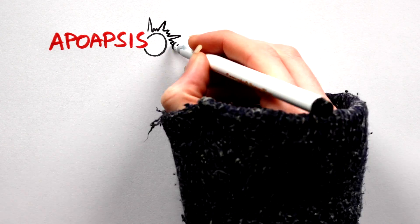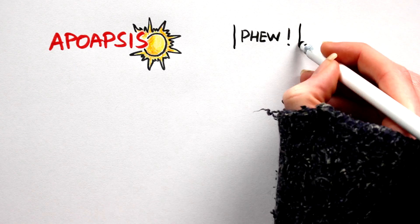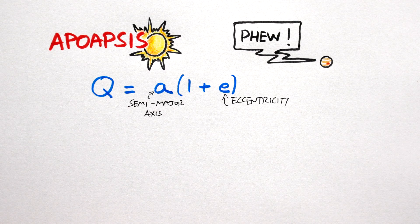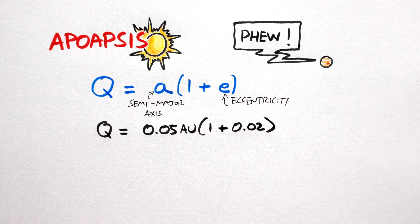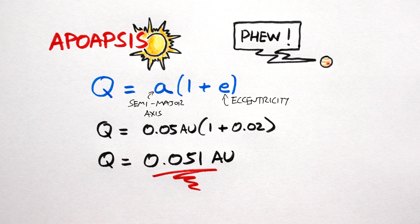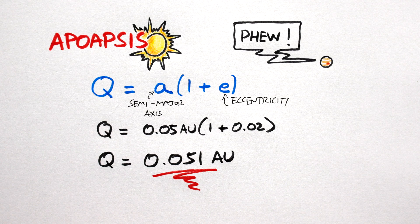The apoapsis, the point at which our hot Jupiter will be furthest from its star, is given by A, the semi-major axis, multiplied by 1 plus the eccentricity. Again, in this case, we have 0.05 AU multiplied by 1 plus 0.02. Thus, our apoapsis will be at 0.051 AU.